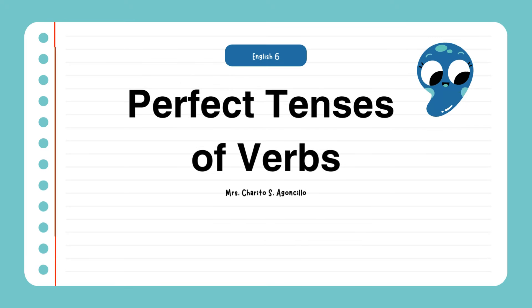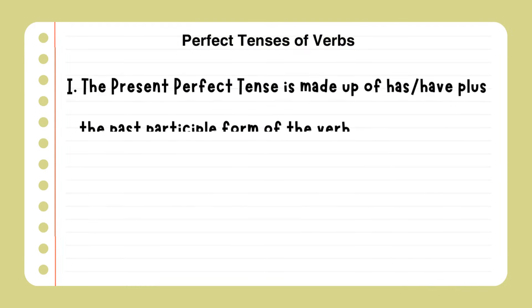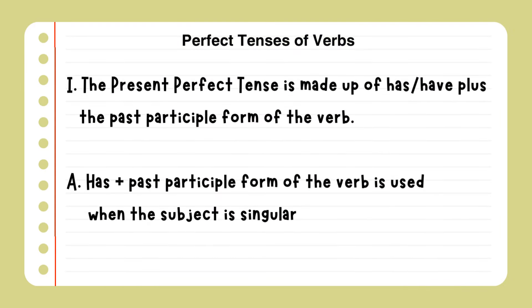Present perfect tenses of verbs. The present perfect tense is made up of has or have plus the past participle form of the verb. Has plus past participle form of the verb is used when the subject is singular.